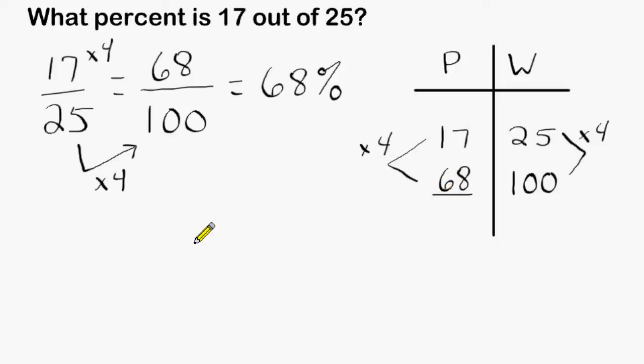And yet another way of doing this problem is by taking our numerator of 17 and dividing that by 25, and we divide to the first two place values after the decimal because that is out of 100, or the hundredths place.